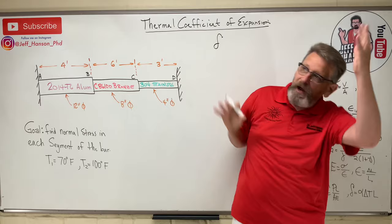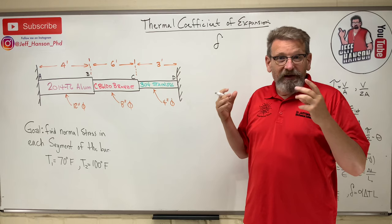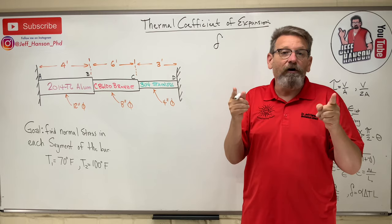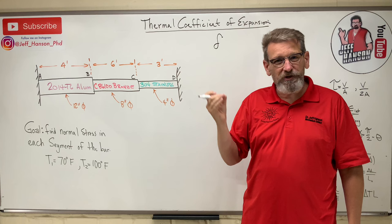As the material heats up, the little molecules inside there start moving around and they start spreading apart. And what happens is that material grows. Engineers, long before me or you, have observed different materials and have observed the change in length of different materials — aluminum, steel, bronze — they all grow at a different rate. And the rate that they change at is called the thermal coefficient of expansion.